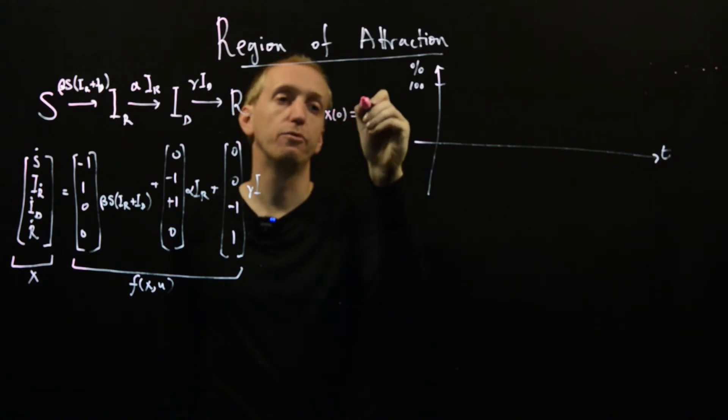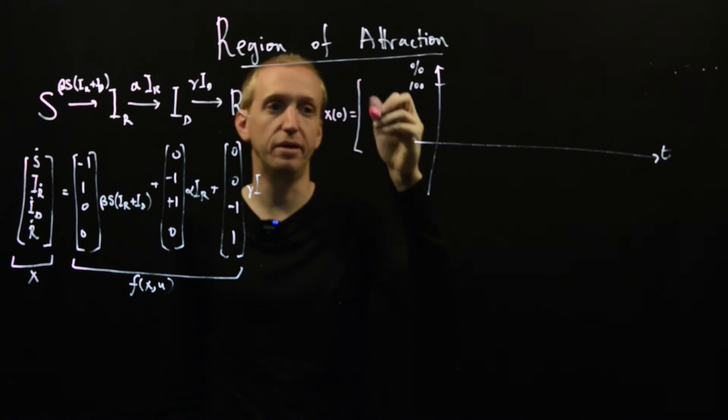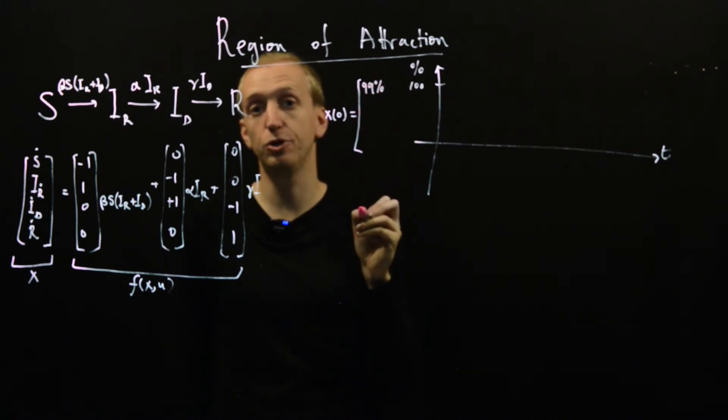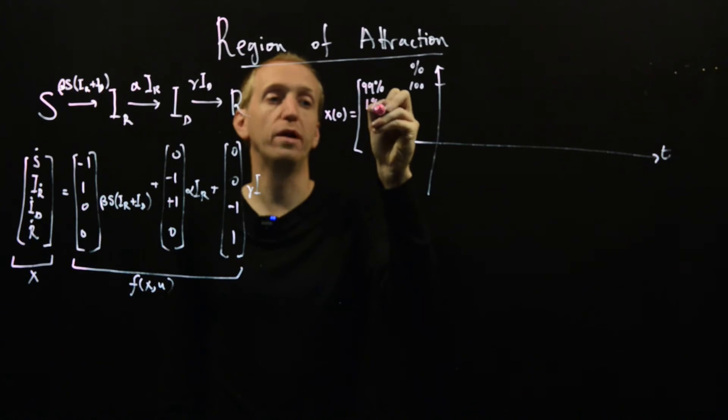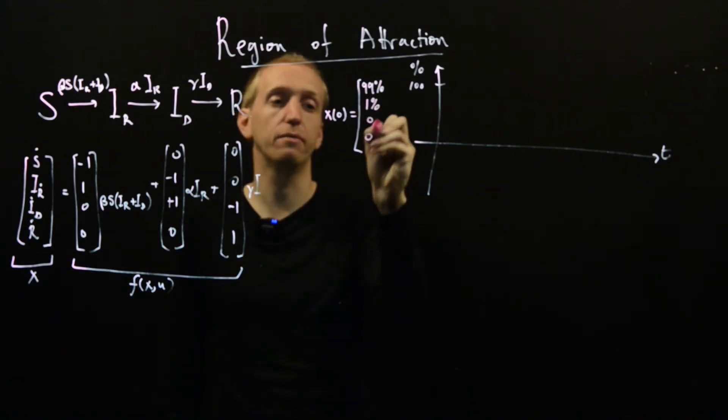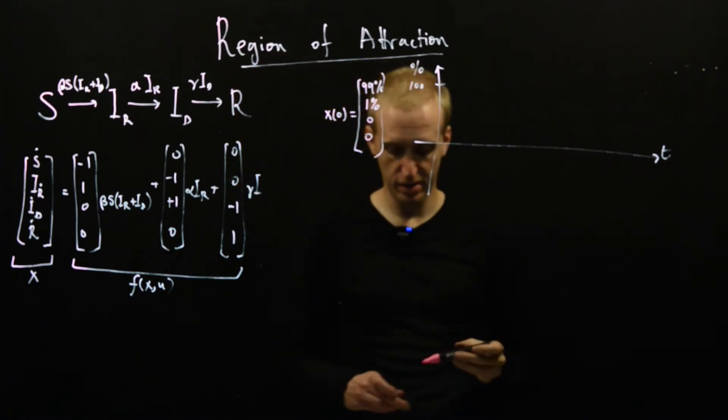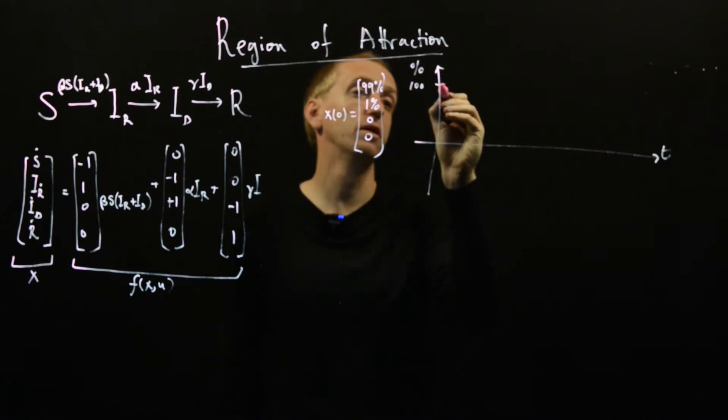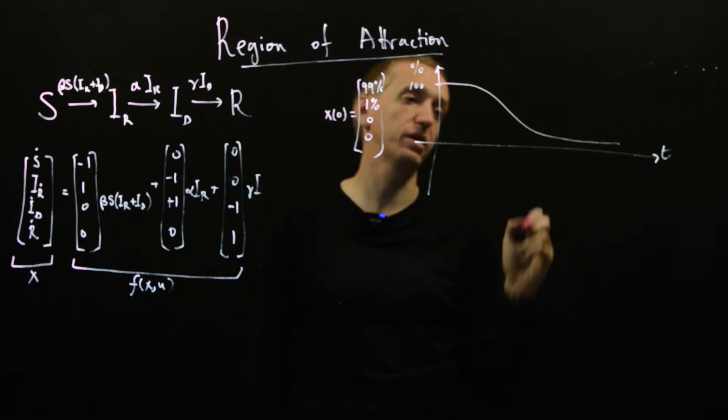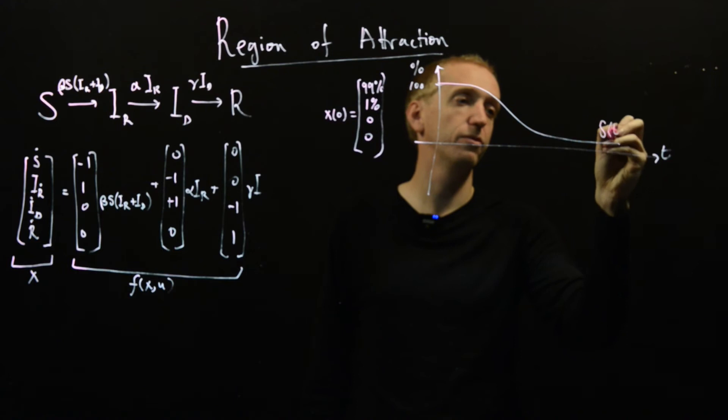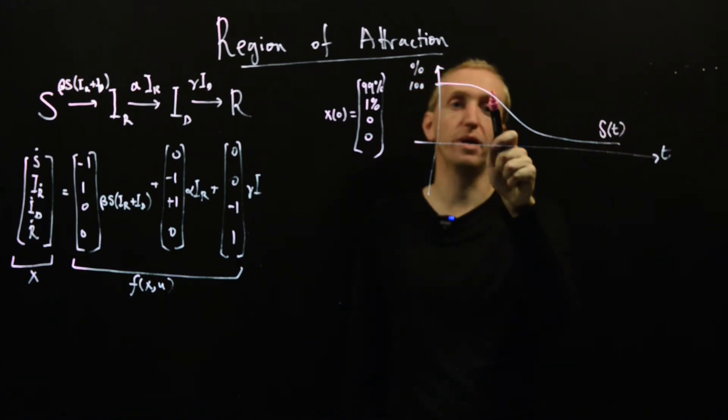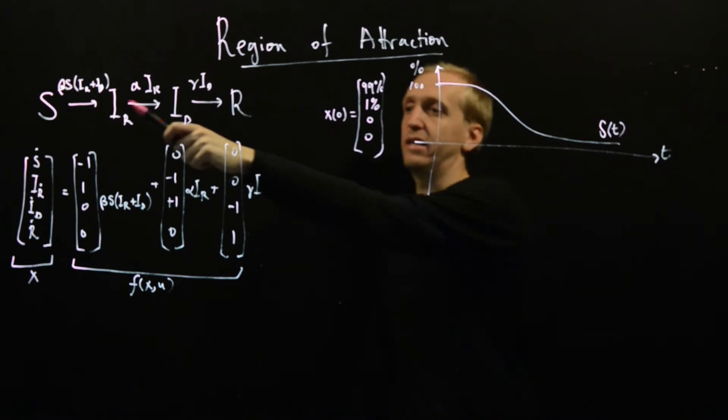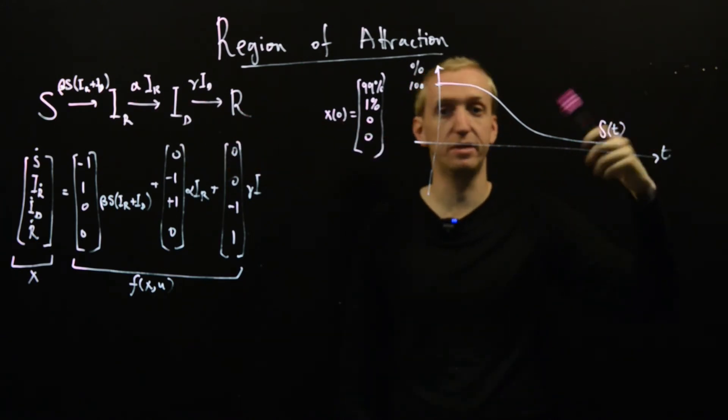So for example we could investigate what would happen if originally at time t equals zero, 99% of our population is susceptible, 1% have entered this first stage of the disease and then we have no one in the other stages. And based on this we can just simulate what happens and we get something that looks like this. So we end up with a curve something like this for S of t. So we see as time progresses the susceptible population drops and this is happening because lots of people who were susceptible they get the disease.